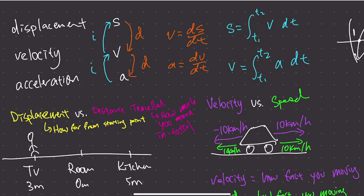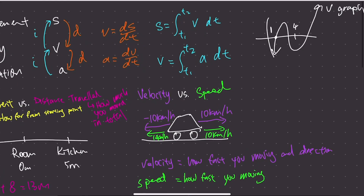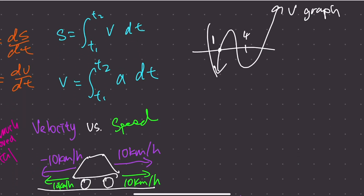When integrating, you integrate between two time values T1 and T2. For example, to find velocity between time zero and two, you integrate acceleration over that interval. To get displacement S from velocity V, you integrate V from T1 to T2. Visually, integration means finding the area between the curve and the x-axis — so the area between time one and time four on the velocity graph gives you the displacement over that interval.